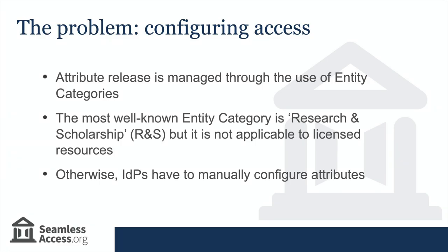Having explained what attributes and attribute release are, let's talk briefly about the problem with them, which revolves around configuring access. To avoid identity providers having to manually configure exactly which attributes to send to each service provider, configuration is managed through entity categories. An entity category is a metadata tag used to group entities like service providers or identity providers, so that a standard set of attributes can be built and applied at the group level rather than the individual entity level.